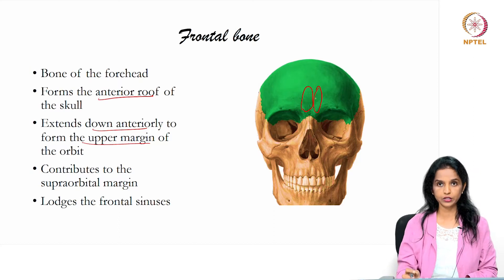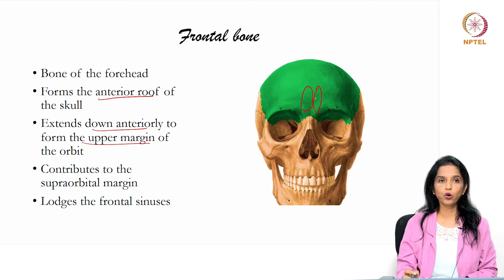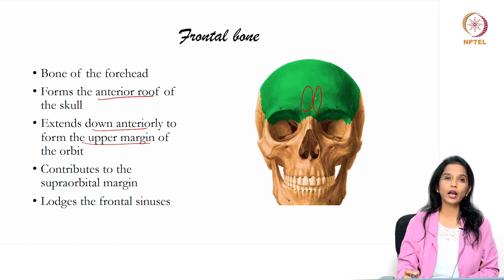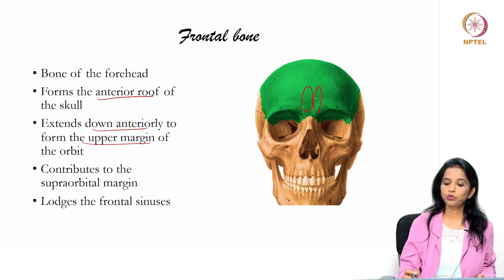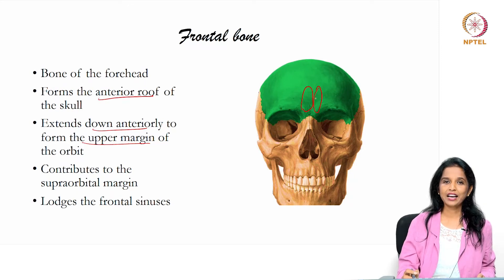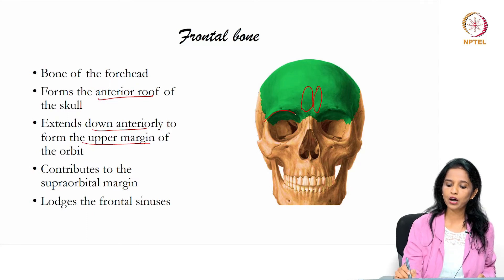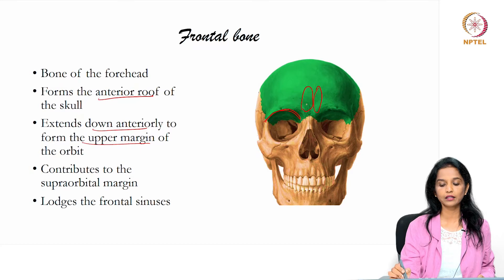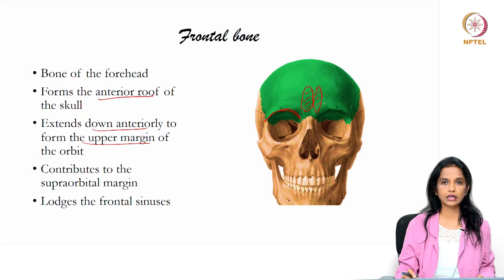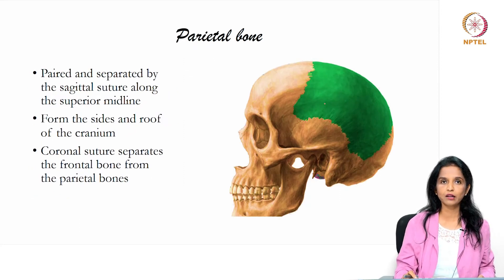There are two frontal sinuses in this region. Sinuses are hollow spaces filled with air. Most craniofacial bones have some form of sinuses because they lighten the weight of the bone and aid in the conductivity and modulation of sound. So the frontal bone forms the anterior roof of the skull, contributes to the supraorbital margin, and contains two frontal sinuses.